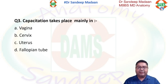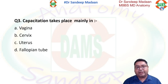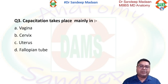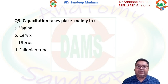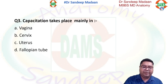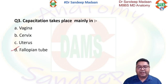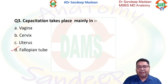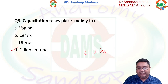Next question: capacitation takes place mainly in which part? All the given options belong to the female reproductive system and all contribute to capacitation, but it is mostly contributed by the fallopian tube, so that is the answer. The time taken is around six to eight hours, with an average of seven hours for capacitation.